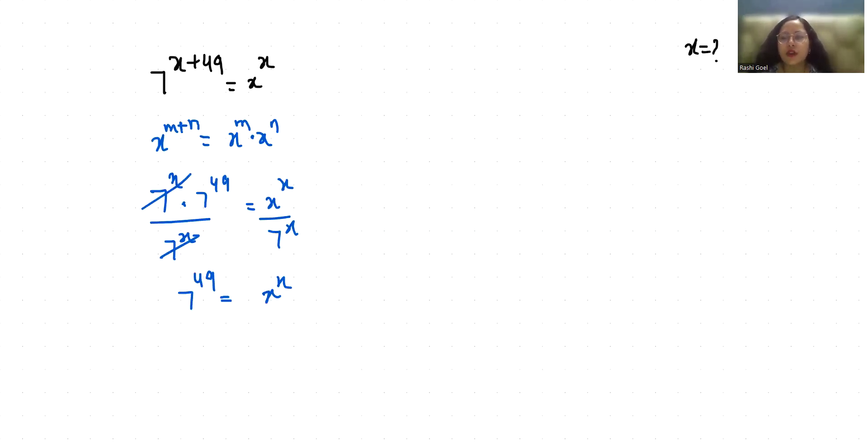According to exponent rule, x power m by y power m we can write it as x by y whole power m. So x by 7 whole power x equals 7 power 49, and 49 is 7 times 7.